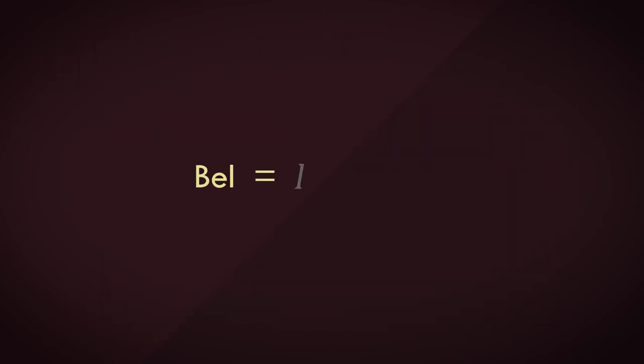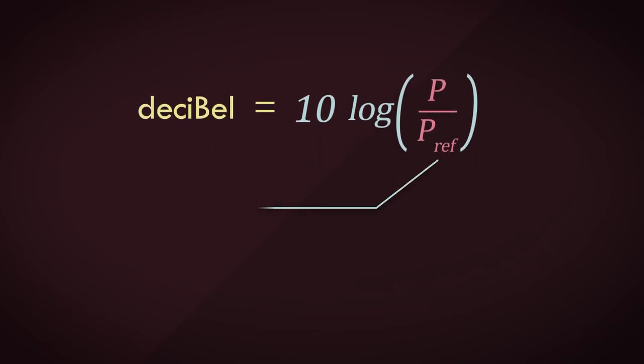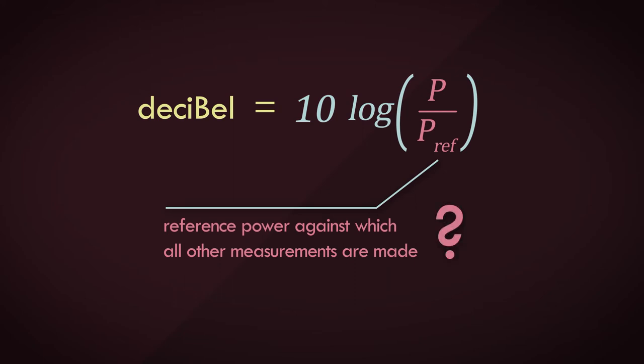A bell is said to be the log of the ratio between two power quantities, perfectly suited for our needs, and a decibel is just one tenth of a bell. And since the decibel is a relative scale of values, we need to pick the reference power level against which all other power levels are measured. What do we pick for the reference value then?